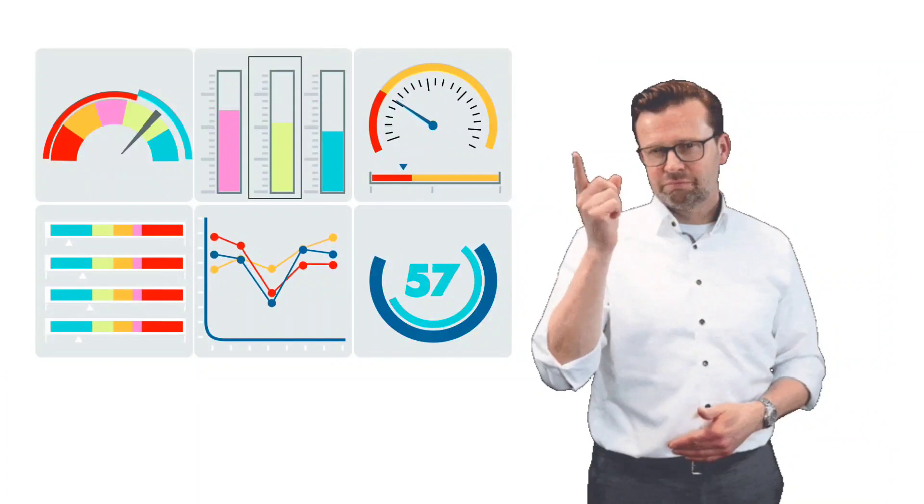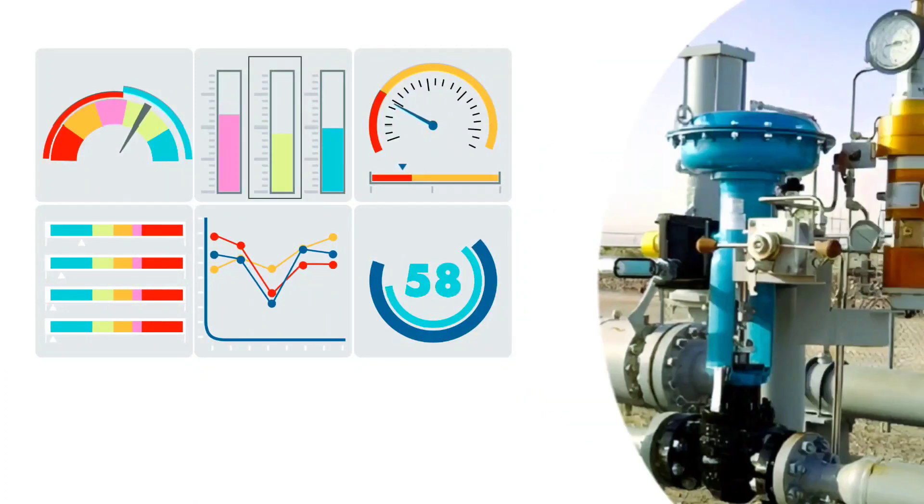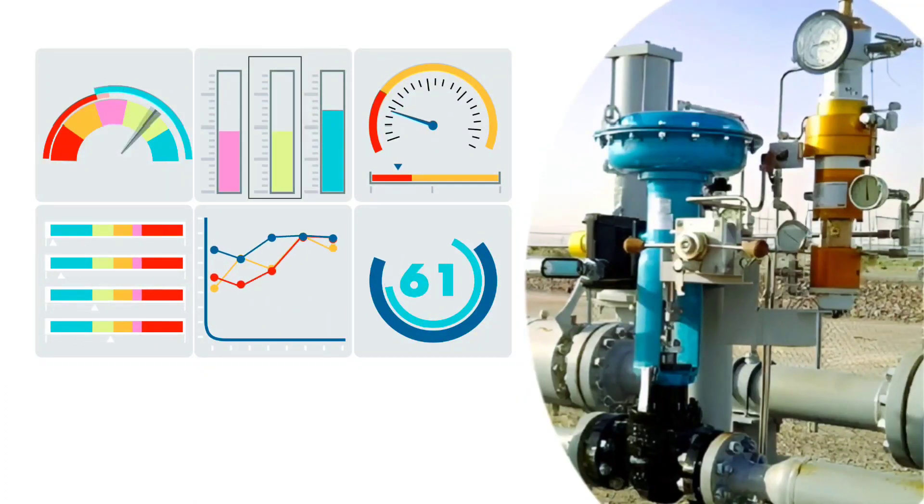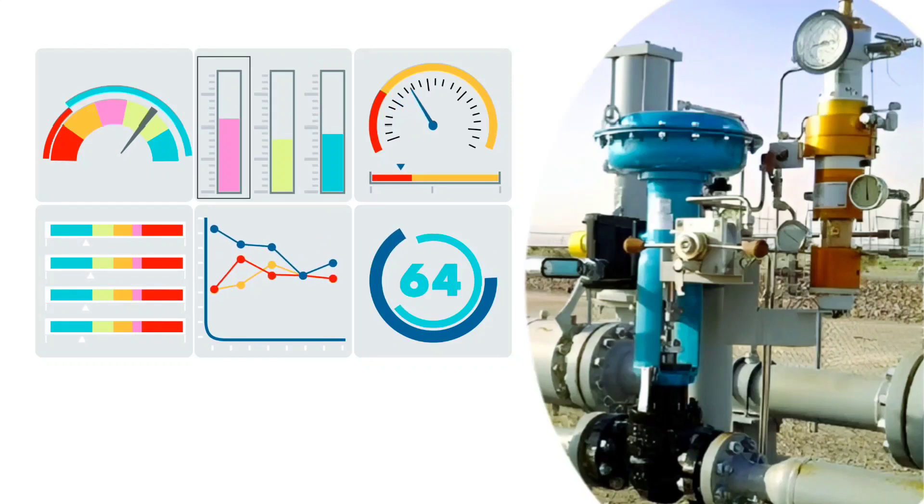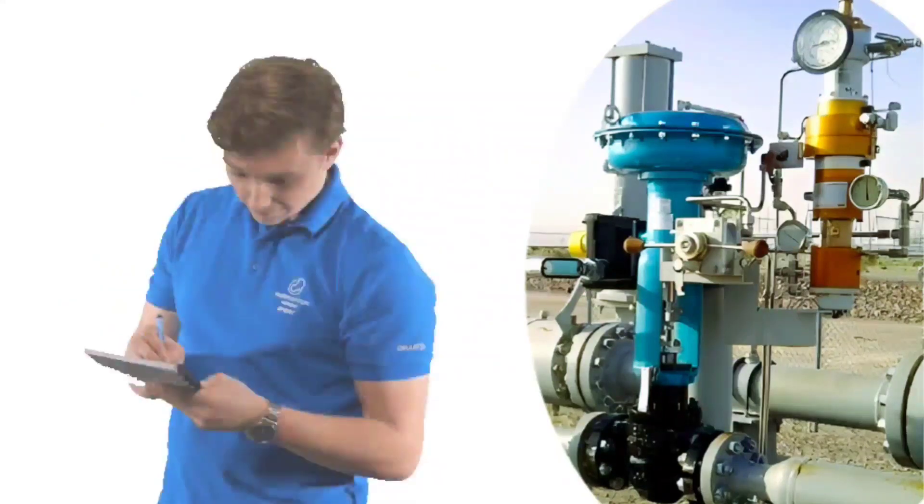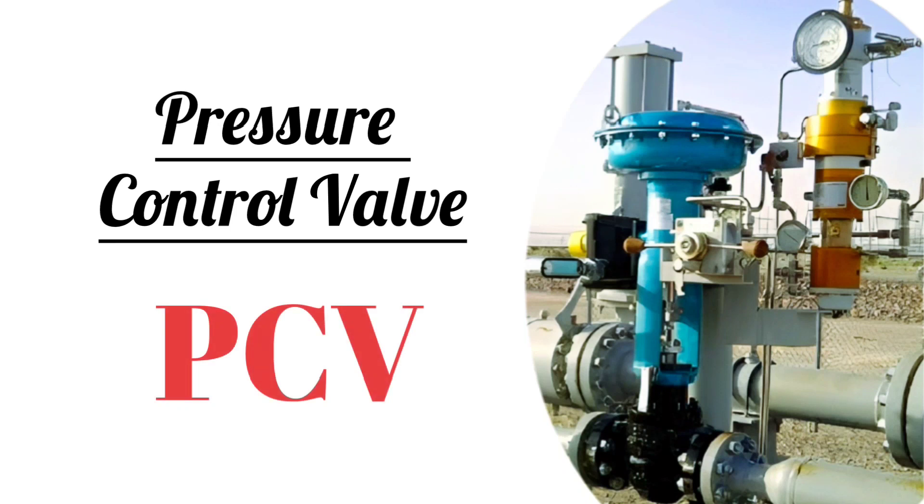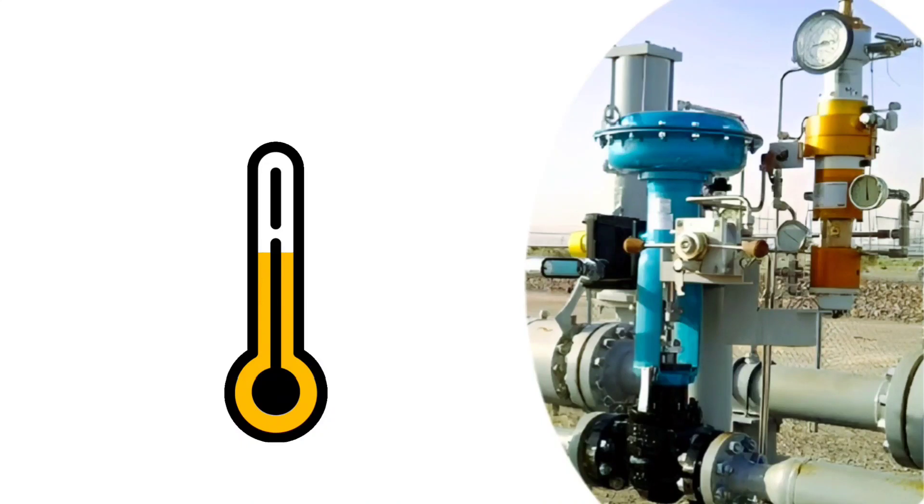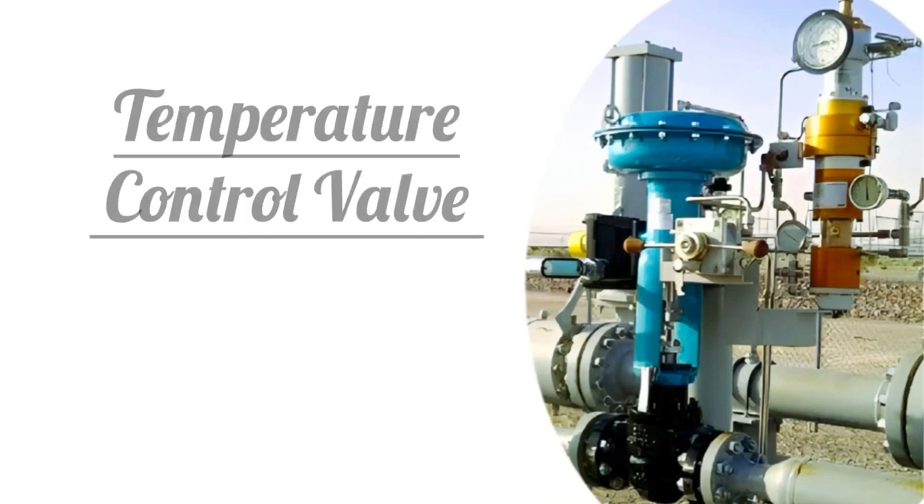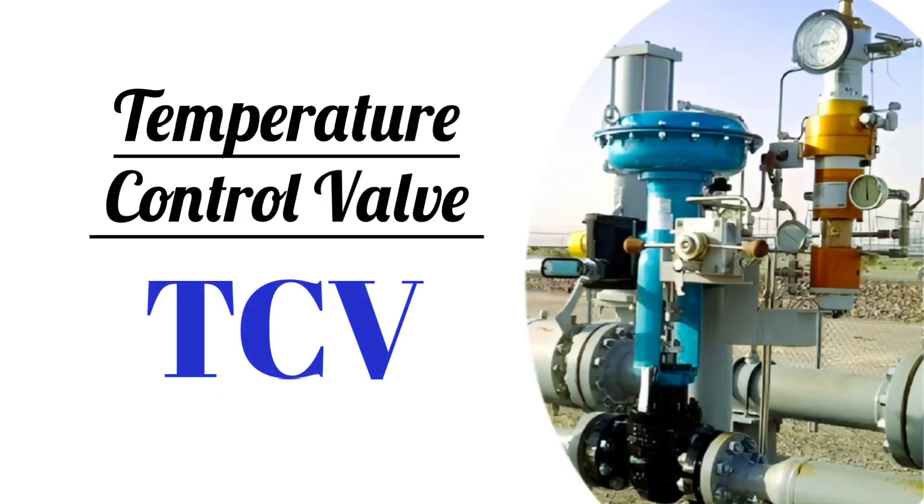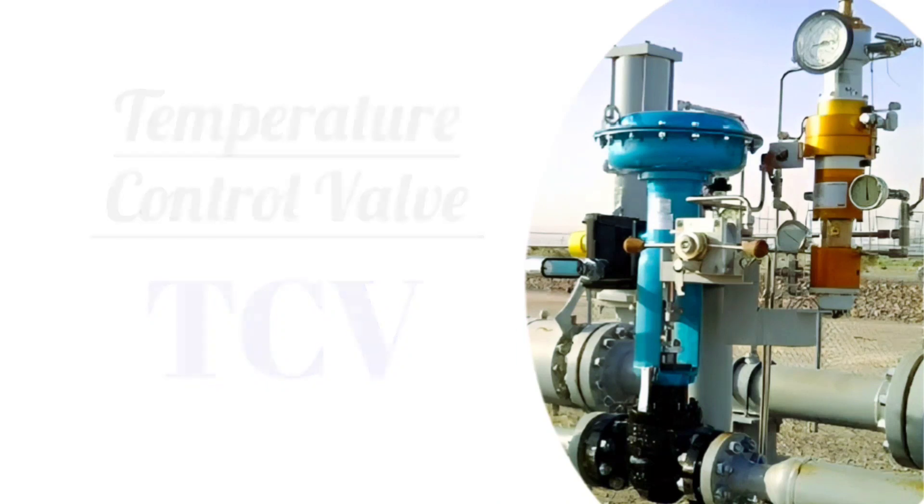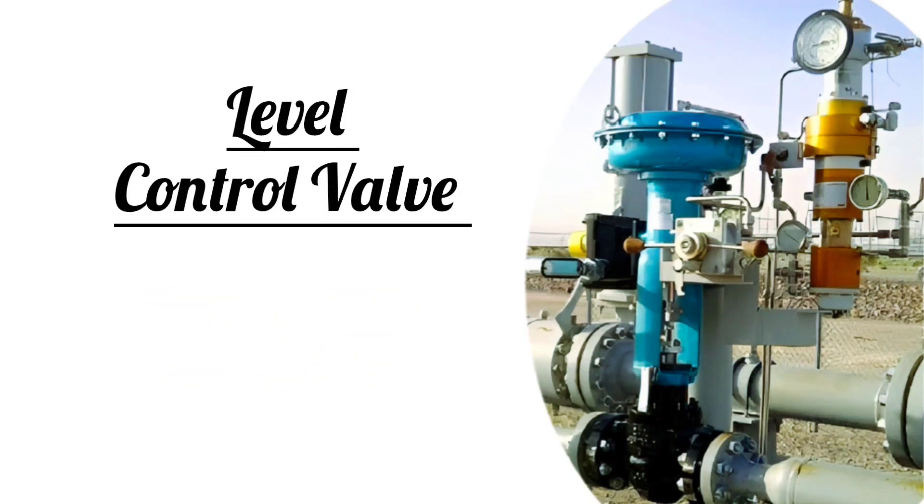Friends, here now pay attention to one understandable thing. The parameter which the control valve controls is named accordingly. Such as to control a pressure, it has pressure control valve or you might have seen it written as PCV. Similarly, to control temperature it has temperature control valve or TCV, and level control valve means LCV, flow control valve means FCV, etc.